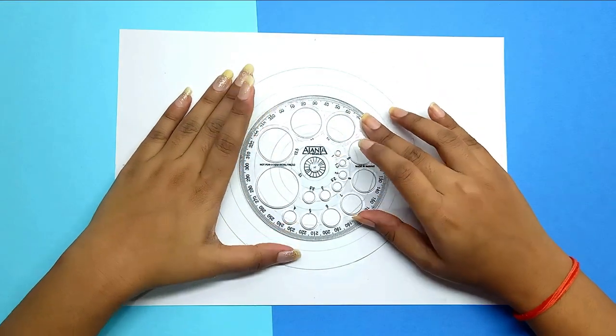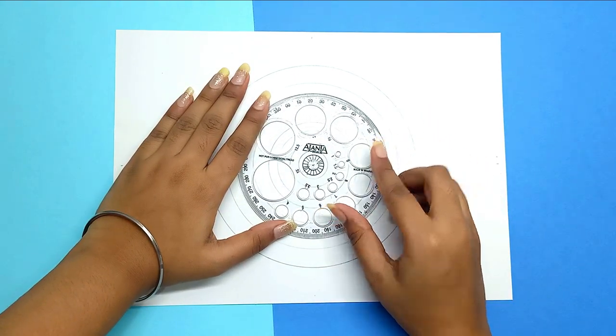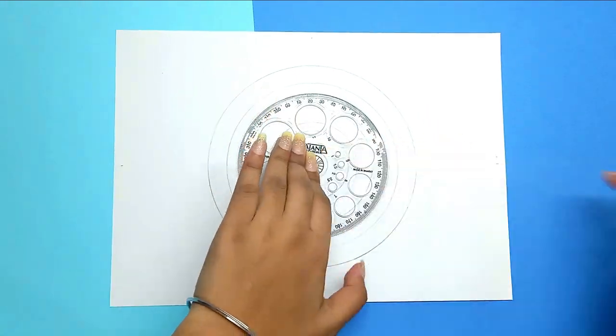After that, you need to take the protractor and put it in the center and draw points at every 10 degrees.